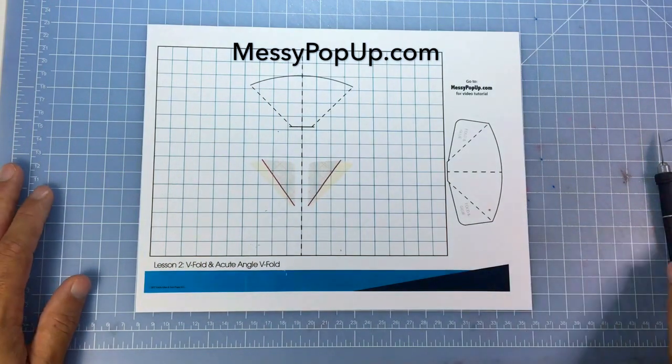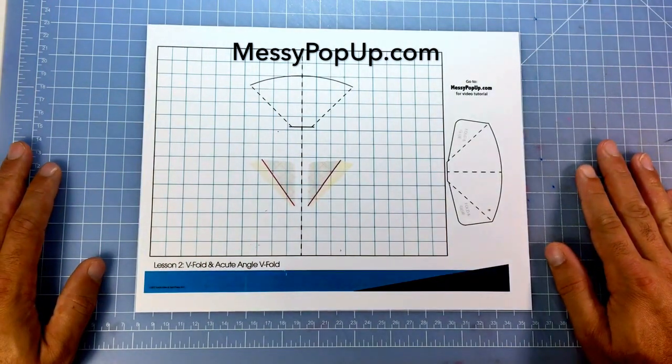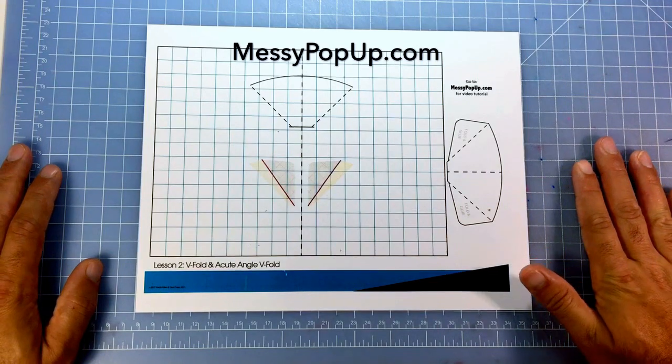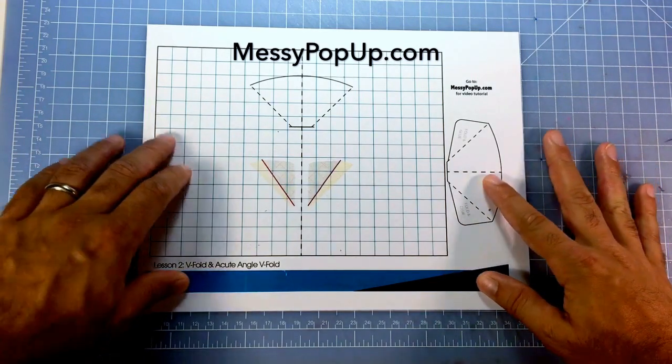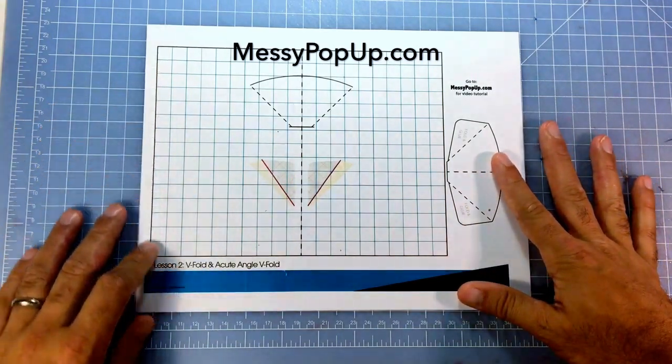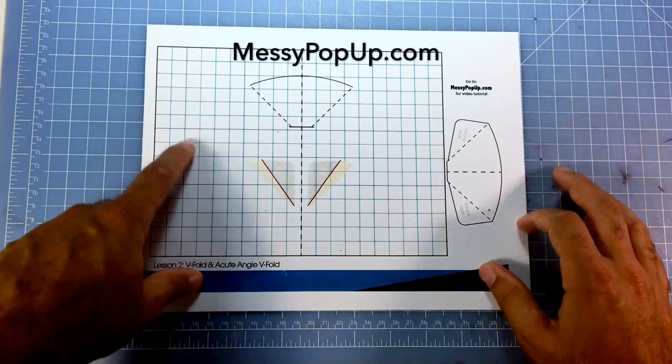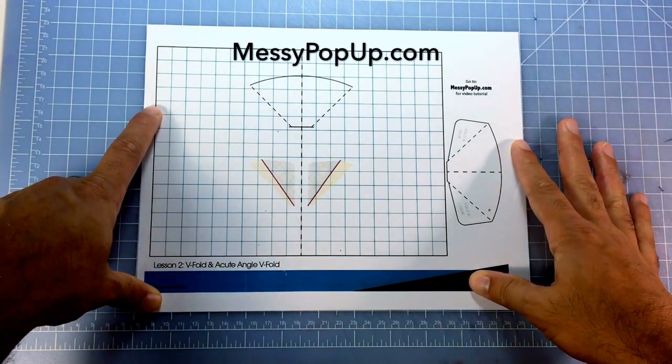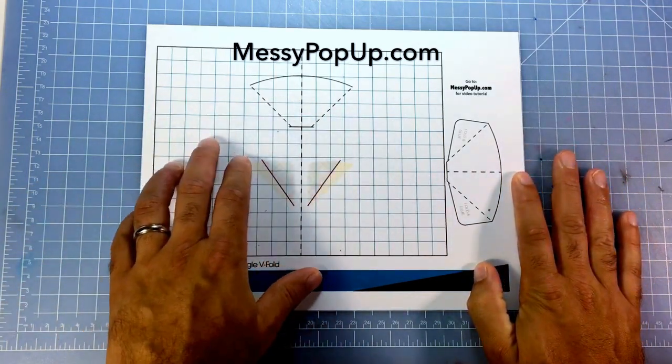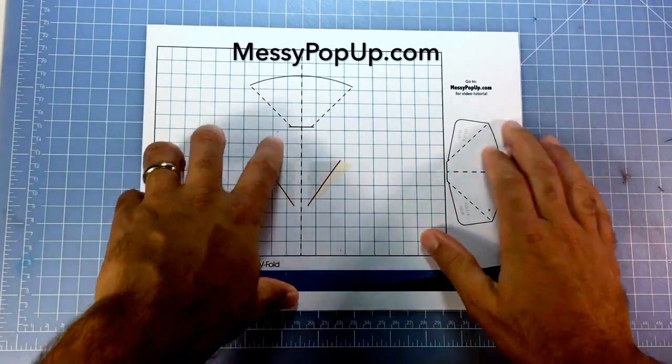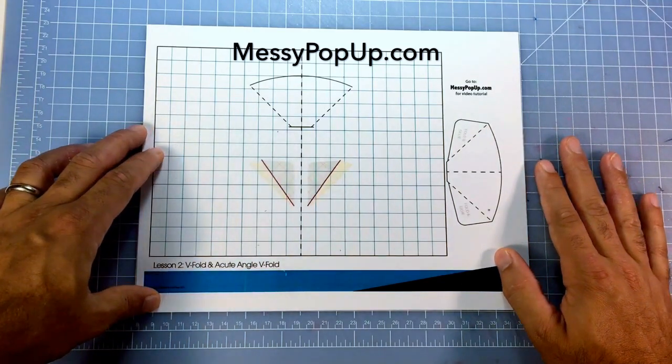Okay, we're ready. First step, just go to messypopup.com and go to the freebies section. There is a PDF called lesson 2 v-fold and acute v-fold, and just go ahead and download that PDF, print it out. You can print it on just regular printer paper or cardstock. Either one will work for this lesson.